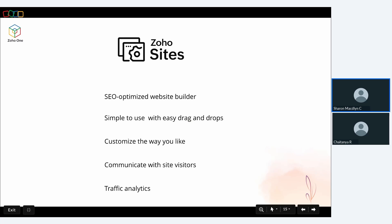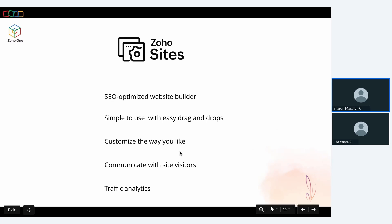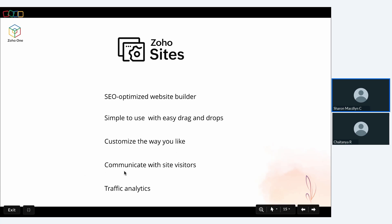Zoho Sites is an SEO-optimized website builder with built-in SEO tools and sitemaps, so your site will be easily read by search engines and rank higher on search results, meaning your audience can find your business easily. It's simple to use with drag-and-drop options, dynamic backgrounds, text boxes, and sections. It's a no-code app, so you can customize your website using HTML, CSS, and visual editors. You also get a bunch of ready-made templates, or you can build from scratch using blogs, comment boxes, and forms to communicate with site visitors. With traffic analytics, you can track, measure, and analyze visitor behavior to optimize your website.